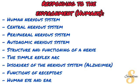The next topic is responding to the environment — the human part. You need to cover the human nervous system: the central nervous system, the peripheral nervous system, and the autonomic nervous system. Pay careful attention to the structure and functions of the nerve and be able to identify them on a diagram. You also need to do the simple reflex arc, look at disorders of the nervous system such as Alzheimer's, and understand the functions of receptors. Then look at the human ear and the human eye, with emphasis on identifying different parts on a diagram.